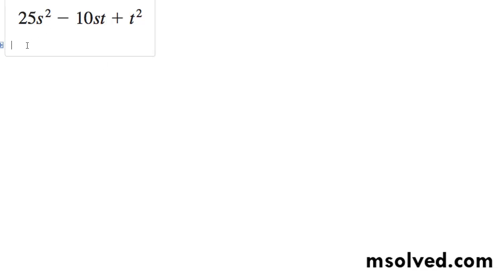We want to factor this completely. This is the difference of two squares. So what we're going to have here is just a minus b squared essentially.